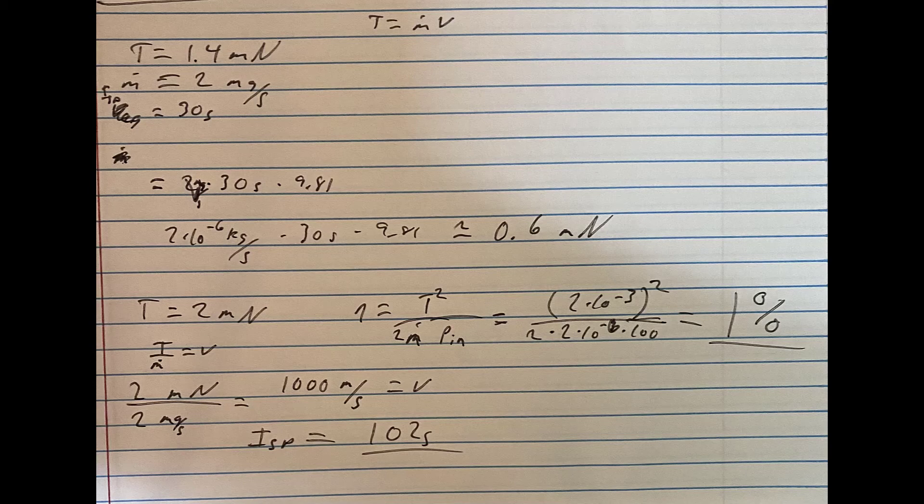We'd roughly estimate, because we weren't able to actually go back and get some old data points, because we got so excited we forgot to actually record some of the data with it running cold. Cold gas thrusters with xenon run about 30 seconds of specific impulse, roughly. So if we know we have 2 mg per second worth of xenon going through, we can say we have roughly about half a mN or 0.6 with the cold gas thrust contributing.